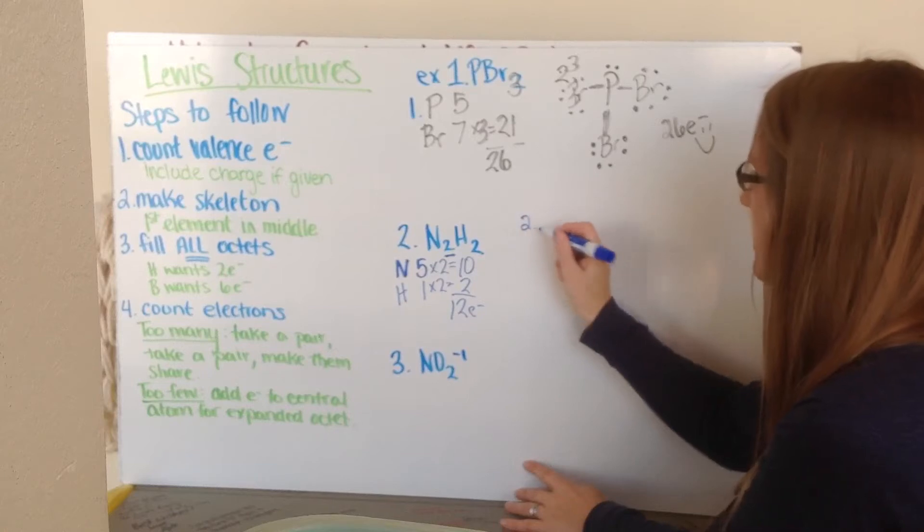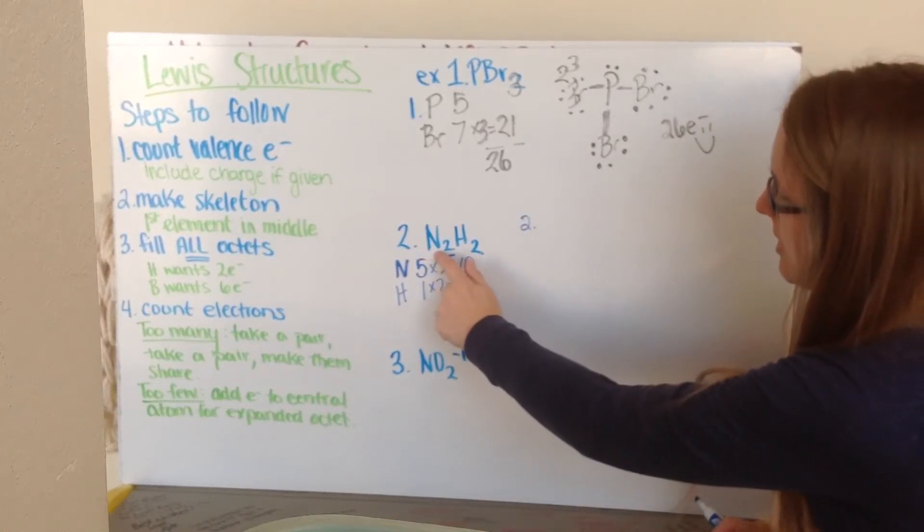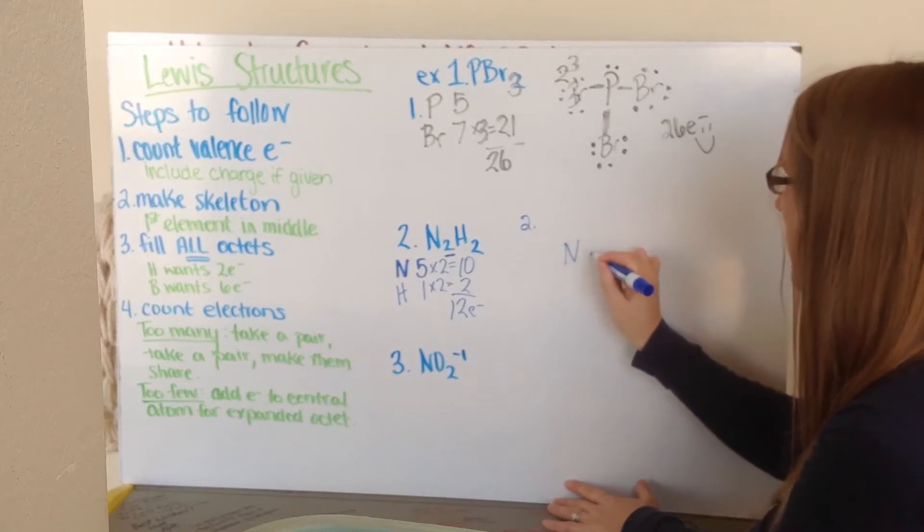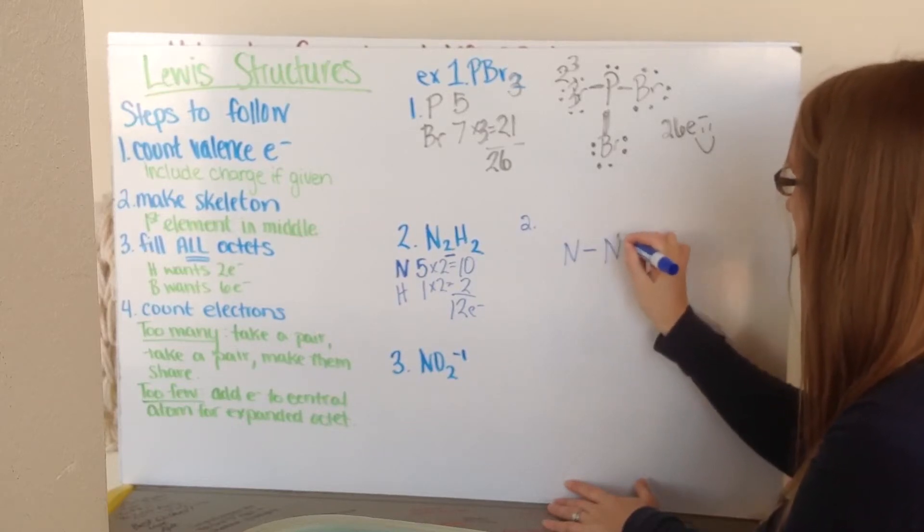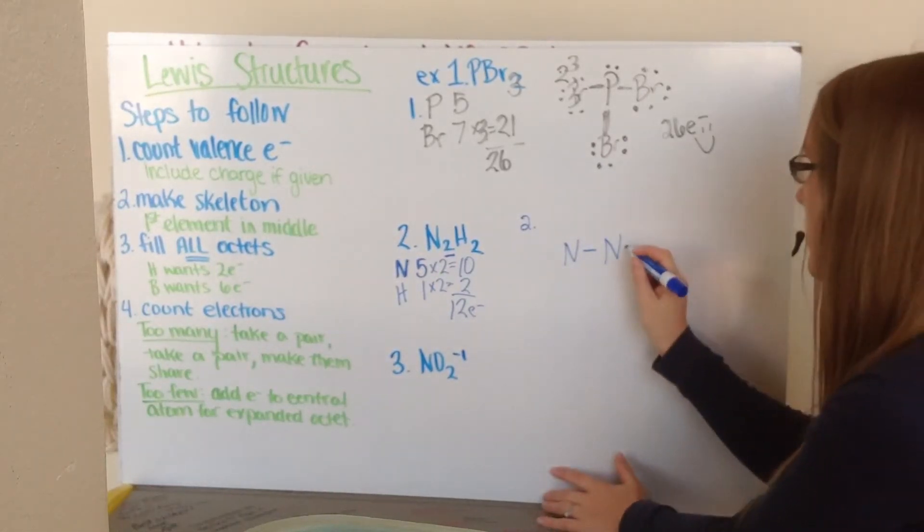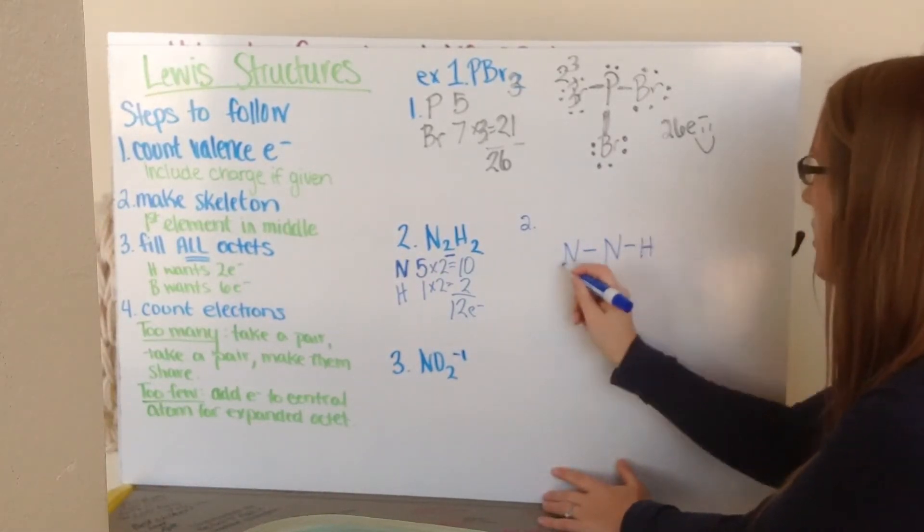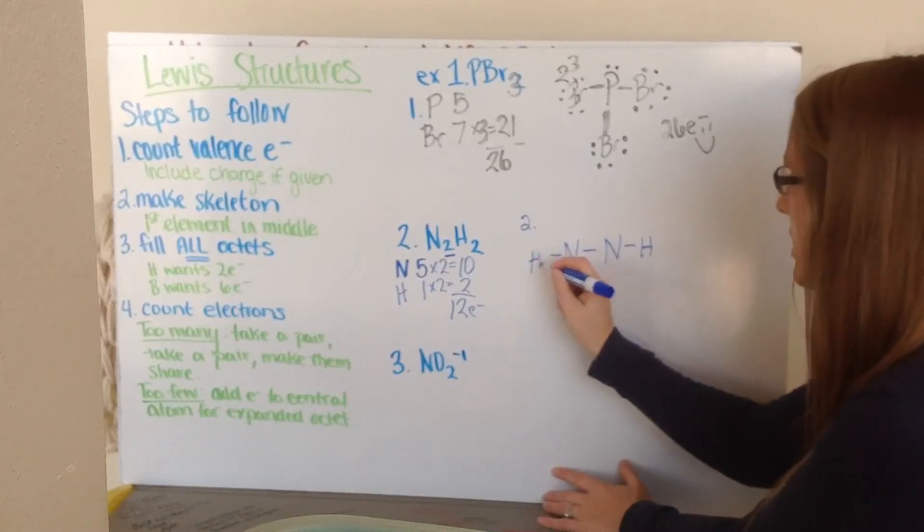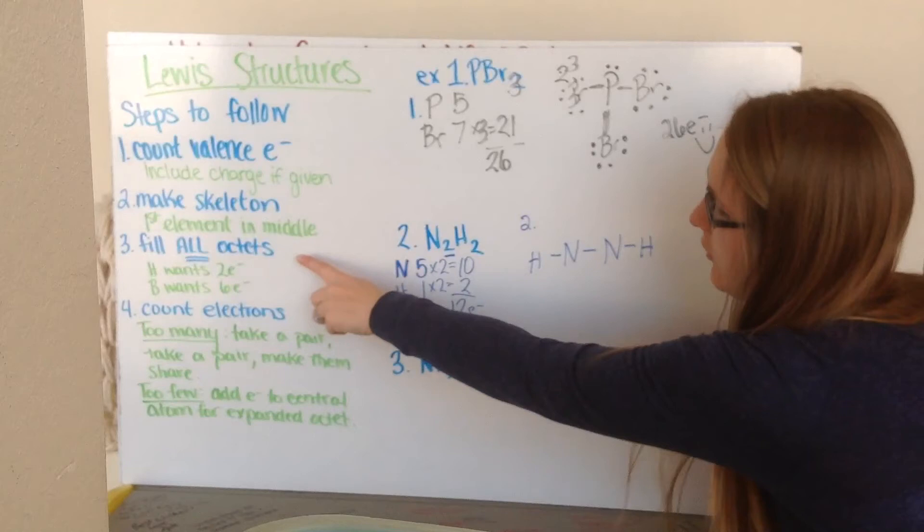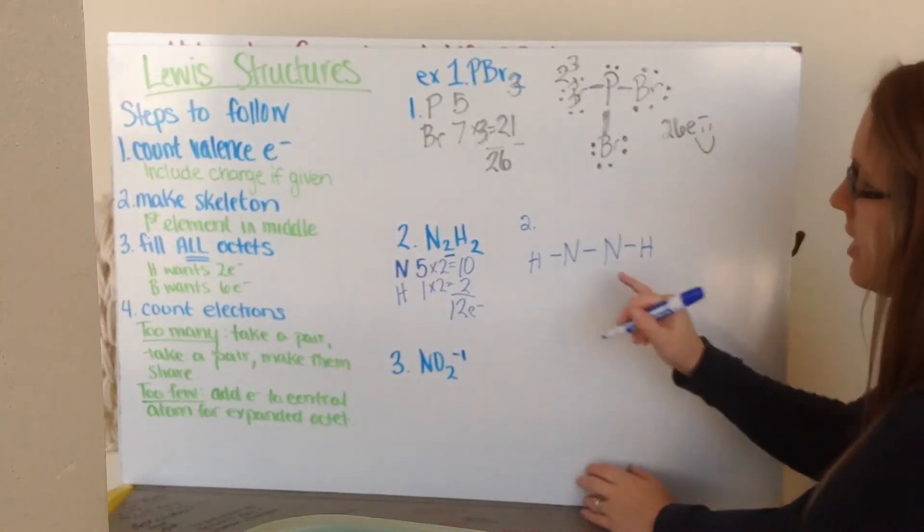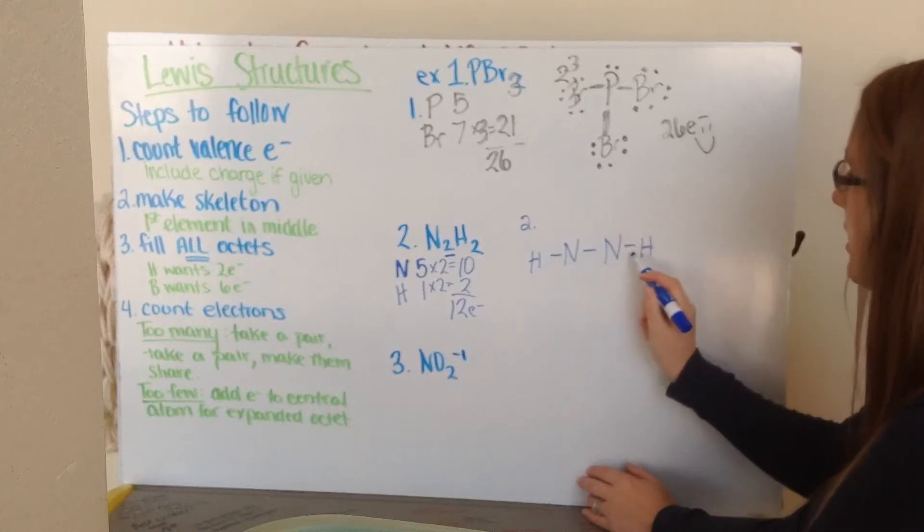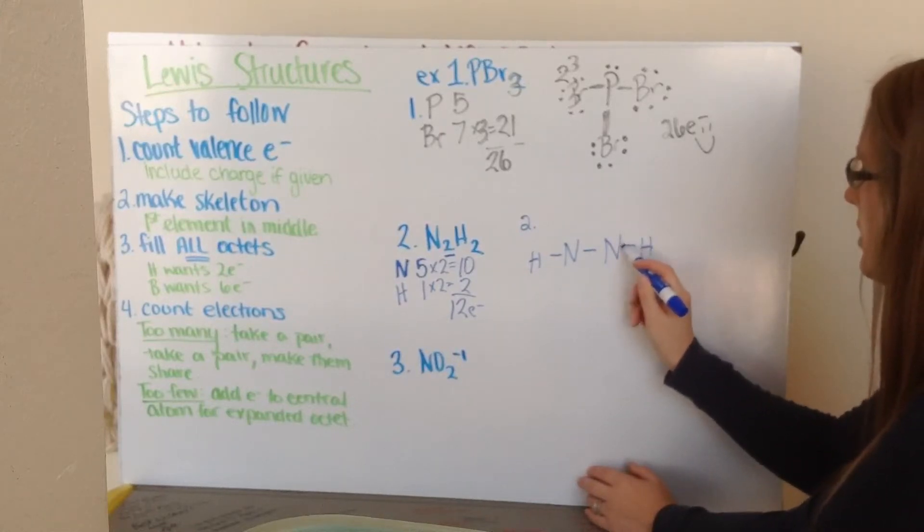Step 2, I make my skeleton. Now my first element goes in the middle. I'm going to put both these nitrogens in the middle. One here, bonded to the other one. And my 2 hydrogens, I'm going to start evenly putting them on both sides. So I put a hydrogen here, and a hydrogen here.